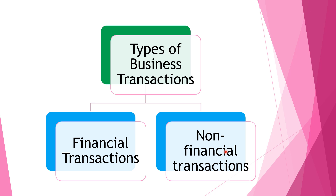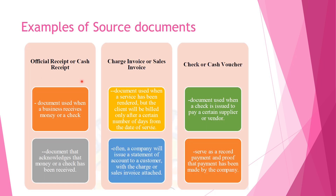Whenever a transaction is to be recorded, the accountant has to ascertain what accounts — assets, liabilities, equity, revenue, or expense — it affects and what monetary value is to be assigned. The various transaction details needed to proceed with the analyzing, identifying, and measuring phase are found in a document called a source document. Examples of source documents are official receipt or cash receipt, charge invoice or sales invoice, and check or cash voucher.